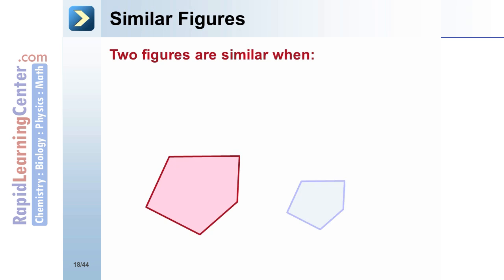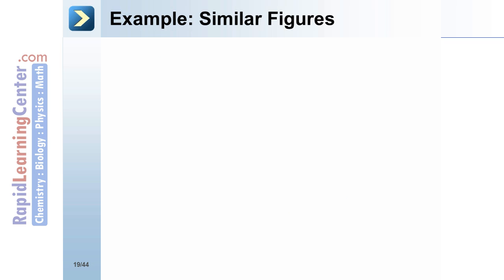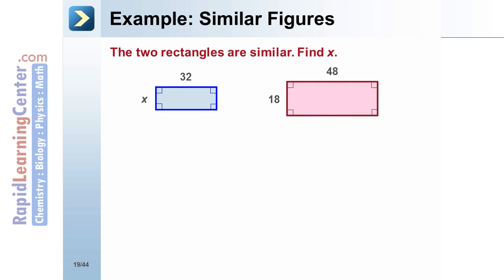Similar Figures - Two figures are similar when their corresponding angles are congruent and the lengths of corresponding sides are proportional. Example: Similar Figures - The two rectangles are similar. Find x. Solution: The lengths of the corresponding sides are x to 18 and 32